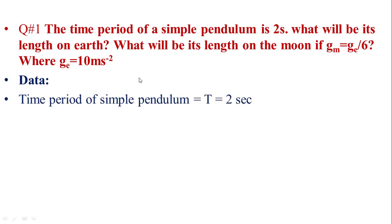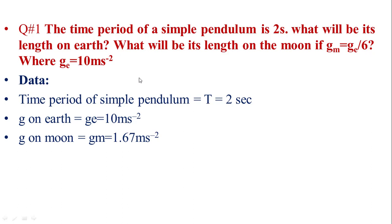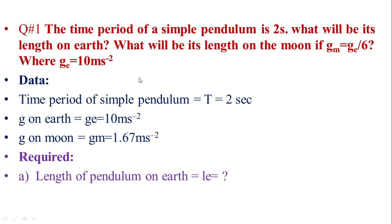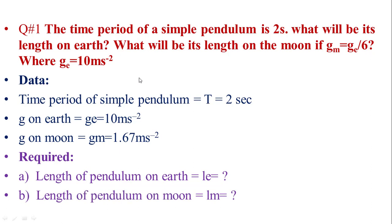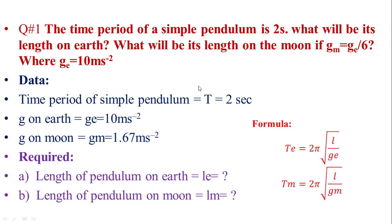Given data: time period of simple pendulum t is equal to 2 seconds, gravitational acceleration on Earth ge is equal to 10 meters per second squared, and gravitational acceleration on Moon gm is equal to 1.67 meters per second squared. Required: length of simple pendulum on Earth Le, and length of simple pendulum on Moon Lm. Formula: time period on Earth te equals 2π times square root of L over ge, and time period on Moon tm equals 2π times square root of L over gm.